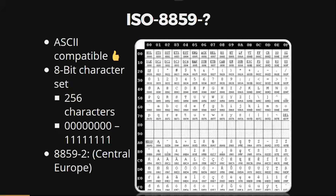To also represent letters not in ASCII, the ISO consortium created the ISO 8859 standard. This uses eight bits compared to ASCII's seven bits, giving 256 characters. There are multiple ISO 8859 variants — one for Central Europe, several for Eastern Europe, and others. Very importantly, ISO is completely ASCII compatible: if you have a document with only ASCII characters, an ASCII document and an ISO document are exactly the same.